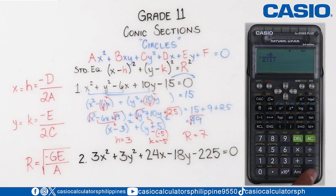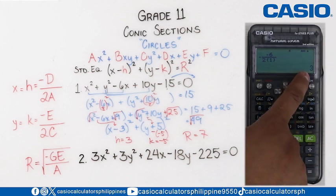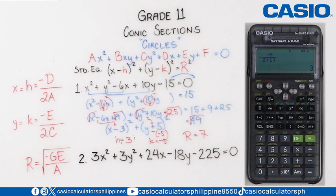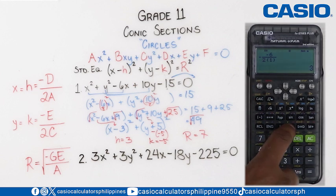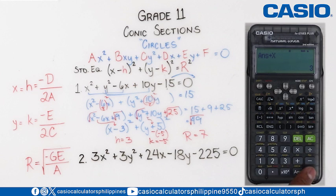So, if we perform this, we get the value of H to be equal to 3, which is the same as what we got a while ago. So then, we need to store this by pressing shift, then store, then let's store it to variable X and press equal sign.